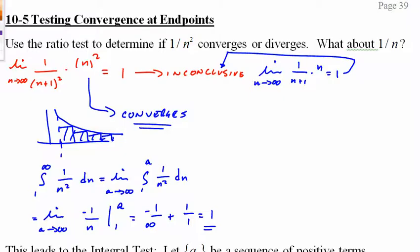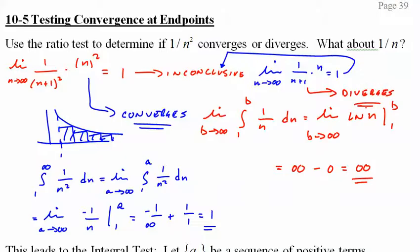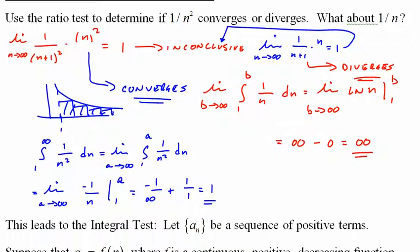For 1/n, we do the same thing. The limit as b approaches infinity of the natural log of n from 1 to b gives infinity minus 0. So this one diverges. Remember, the ratio test just tells us whether it converges or diverges, and if it's 1, it doesn't tell us anything. This is the integral test: if you can find the integral, you can say it converges or diverges.